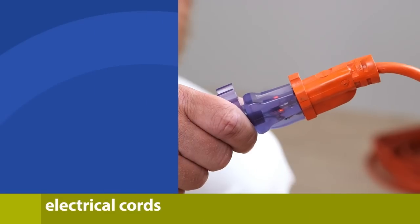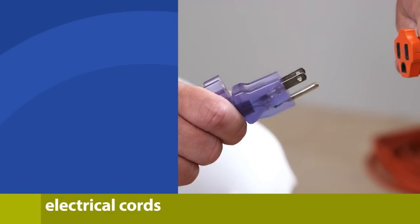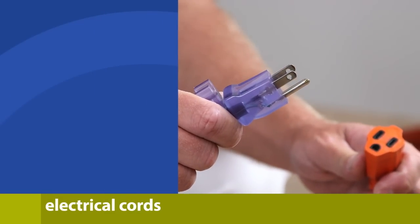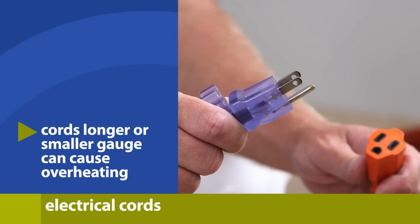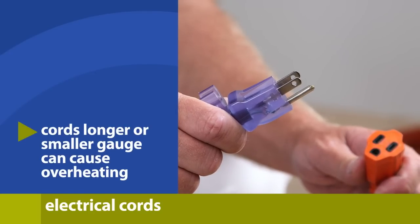Finally, it's important to use electrical cords that are approved by the sprayer's manufacturer. Cords that are longer or smaller gauge than recommended can cause the unit to overheat and shorten the life of the sprayer.